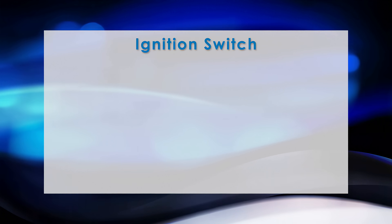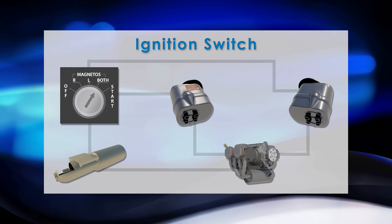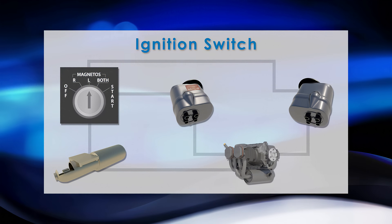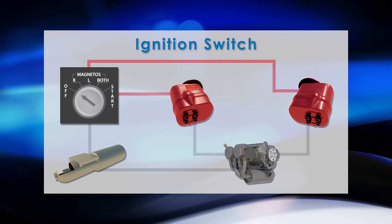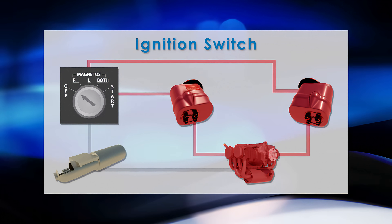The last component is the ignition switch, which is the pilot's way of controlling the magnetos. In most general aviation aircraft, the switch is labeled off, right, left, both, and start. If the switch was to be placed off, then the magnetos would not be able to power the spark plugs. Therefore, the engine would not be able to run, and it would turn off. If the switch was placed on the right or left position, then only that respective magneto would be powering its spark plugs.